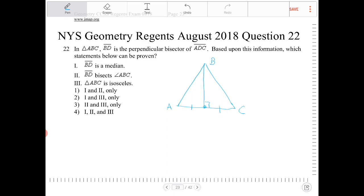Based upon this information, which statement below can be proven? So if this is the case, BD is the perpendicular bisector of ADC and BD is congruent to itself, and this angle on the left there is also a 90 degree angle, we can then safely declare that AB is going to be congruent to BC because the two triangles, we have two congruent right triangles based on side angle side.